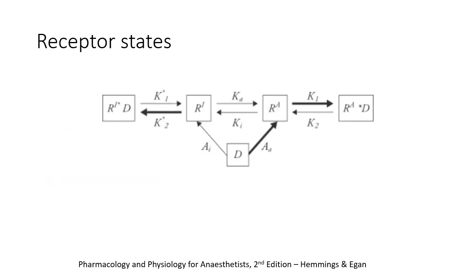Here we can see that there is more going on than simply the drug binds a receptor and activates it. In this diagram, D is for drug, RI is for inactive unbound receptor, RID is for inactive bound receptor, RA is for active unbound receptor, and RAD is for the active bound receptor. The arrows in bold indicate the direction in which an equilibrium will tend. The drug has a higher affinity for the active form of the receptor (arrow: big A, little a), and the drug tends to stabilise the active conformation of the receptor (arrow K1, top right).